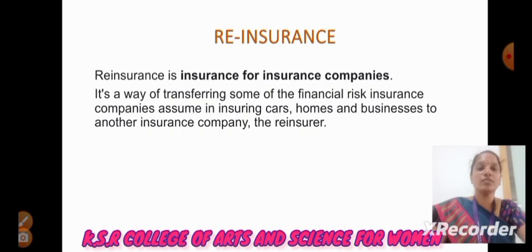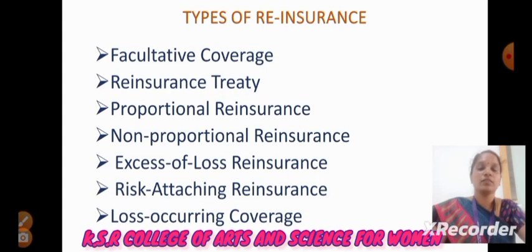Next, reinsurance: Reinsurance is insurance for insurance companies. It is a way of transferring some of the financial risk that insurance companies assume in insuring cars, homes, and businesses to another insurance company, the reinsurer. There are some types of reinsurance: facultative coverage, reinsurance treaty, proportional reinsurance, non-proportional reinsurance, excess of loss reinsurance, risk attaching reinsurance, and loss occurring coverage.